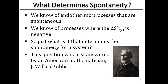We looked at some endothermic processes that were spontaneous — like ice melting above zero degrees C. We also know of processes where delta S is negative, something like the Haber process we just looked at. So what is it exactly that determines spontaneity for a system? If a system takes in energy, or has a negative delta S, and those could still be spontaneous — what exactly governs this?